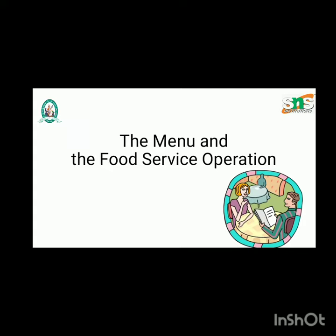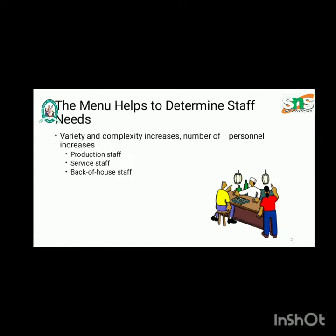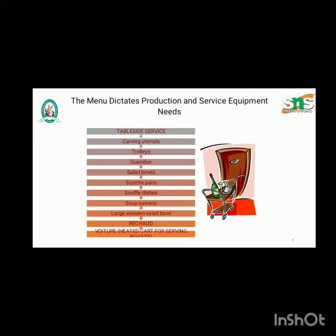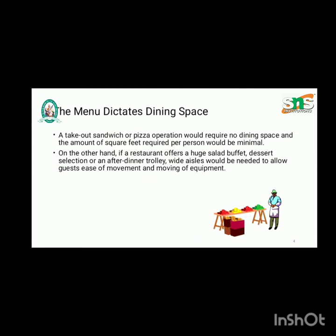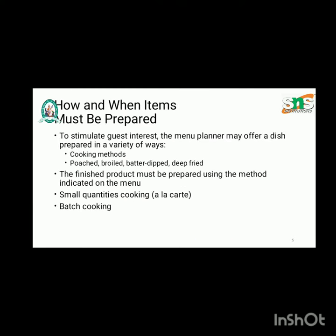The topic is the menu and the food service operation. The menu helps to determine staff needs, and it dictates production and service equipment needs. The menu also dictates dining space, how and when items must be prepared, and is a key factor in the development of cost control procedures.